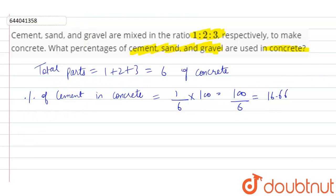Now, percentage of sand in concrete: sand is in the ratio of 2, that is 2 upon total parts 6, into 100. That is 100 by 3, that is 33.33 percent.